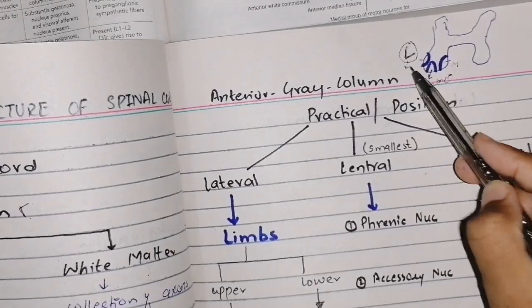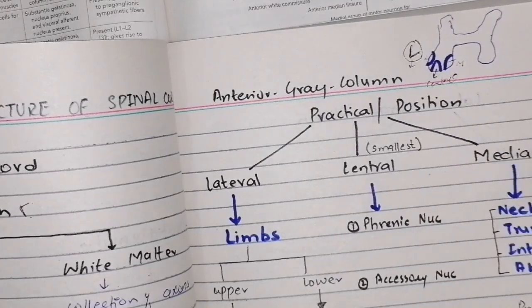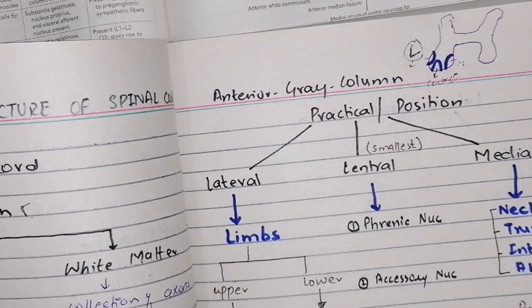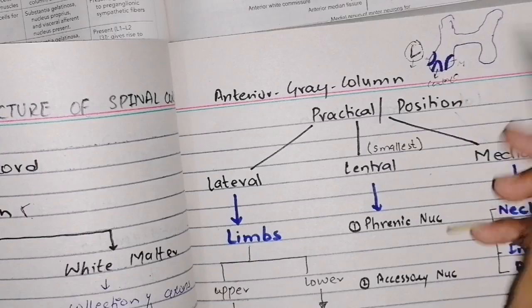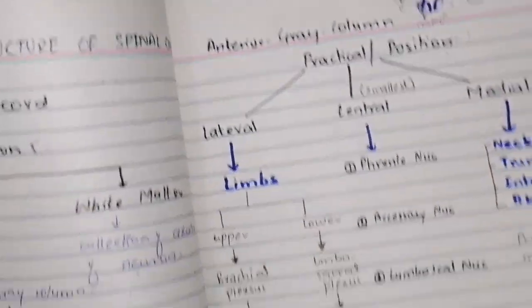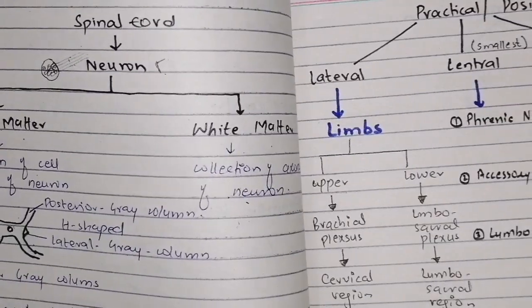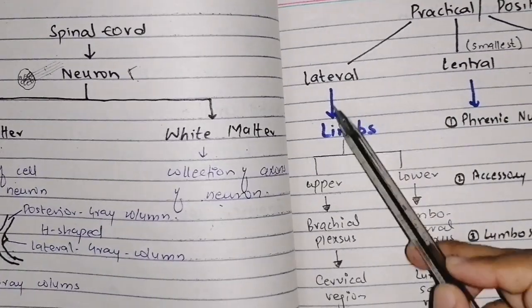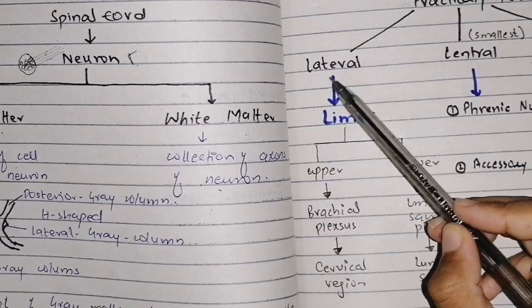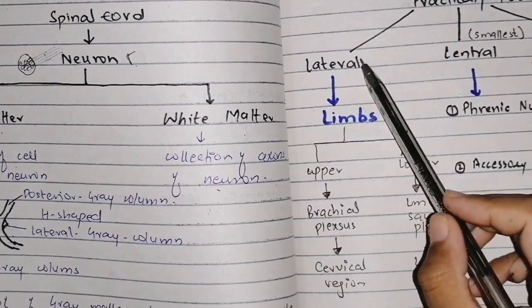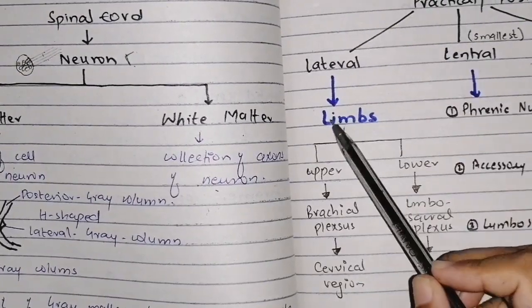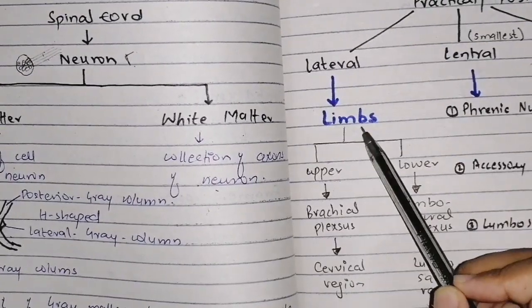To remember: L from lateral and L from limbs. Our limbs are located laterally on the body. So the lateral nerve group of the anterior gray column will supply the limbs.